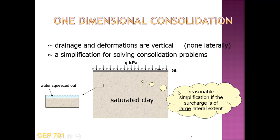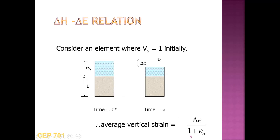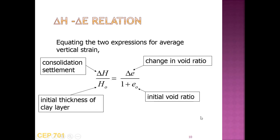Water is squeezed out vertically in one direction. Average vertical strain is delta H divided by H-naught (change in thickness over original thickness). For a saturated clay, the void ratio starts at E-naught and changes to E-naught minus delta E at infinite time. Assuming volume of solids equals 1, average vertical strain equals delta E divided by (1 + E-naught), giving settlement: delta H = H-naught × delta E / (1 + E-naught).